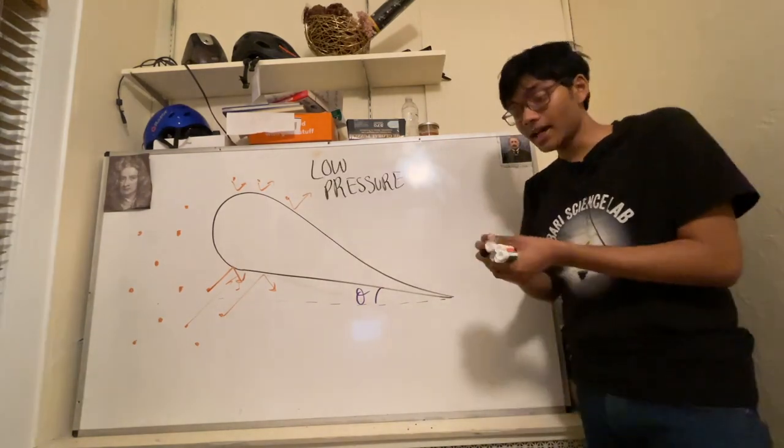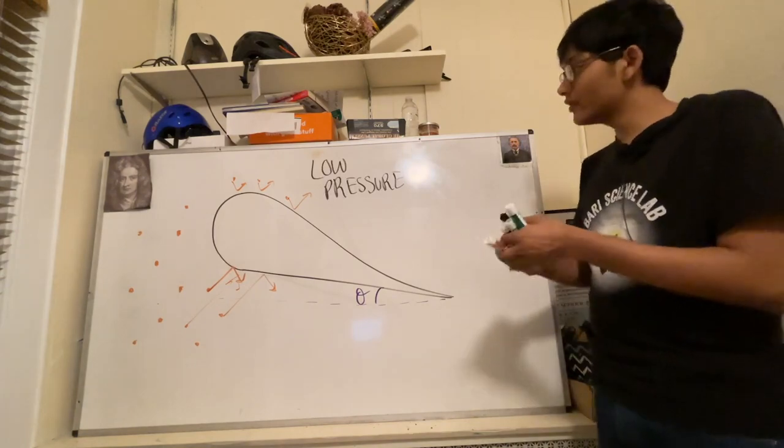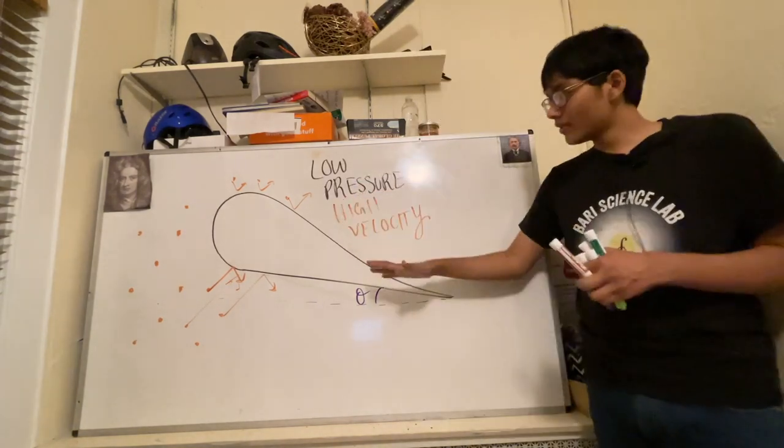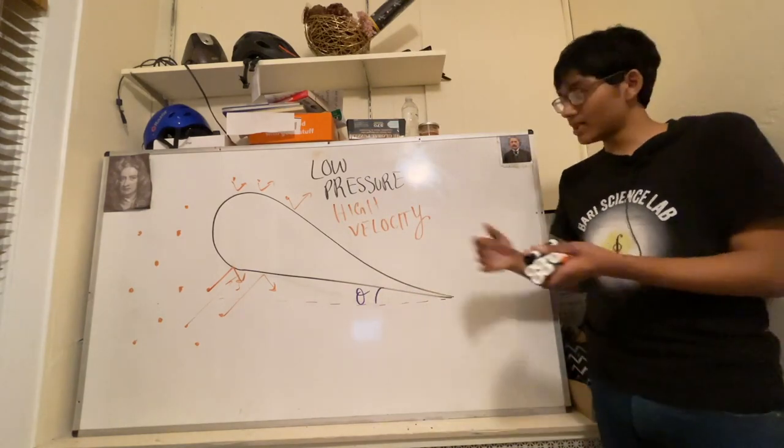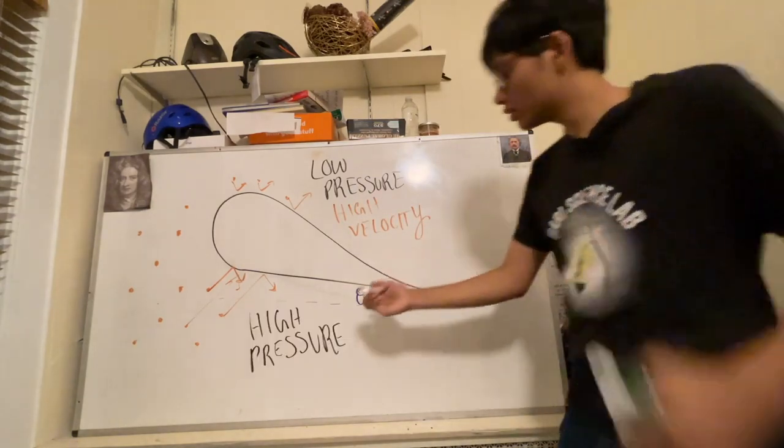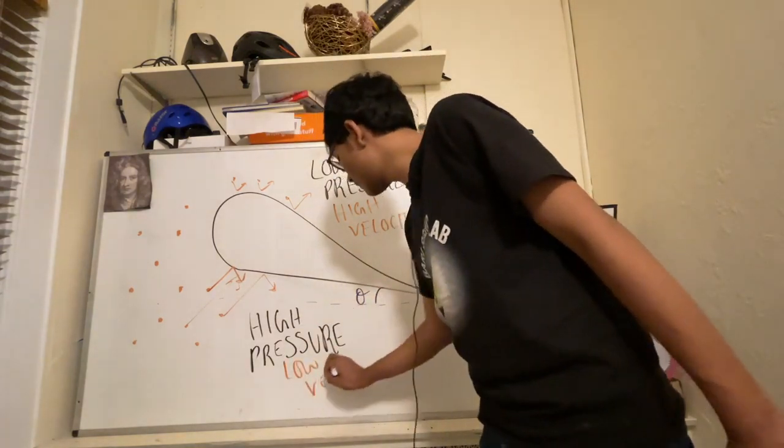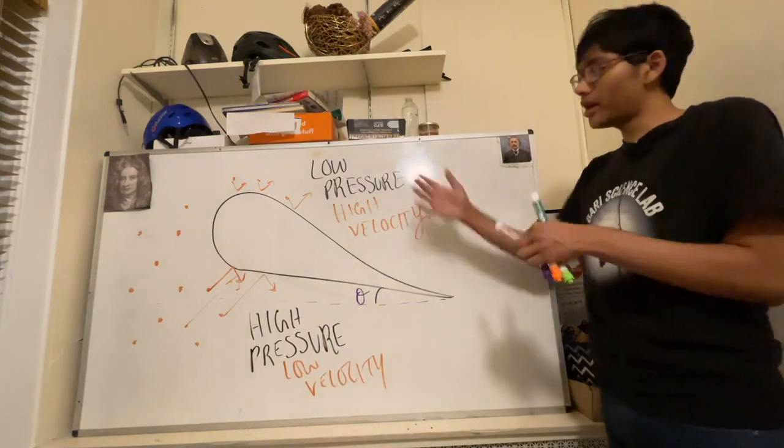creates a low pressure. On the other hand, on the bottom of the airfoil, we have a high pressure created by the low velocity. This high pressure is due to the low velocity or low kinetic energy of the molecules at the bottom of the airfoil. And so you have a pressure differential.